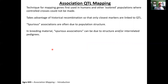Association mapping was first used in humans and other outbred populations where you can't make controlled crosses the way you can for a bi-parental population. One huge advantage is we're taking advantage of historical recombination, which gives better resolution to find the closest marker linked to your QTL. However, and this is a really big however, we can often find spurious associations due to population structure. In breeding material, these spurious associations are often due to some type of structure or interrelated pedigrees.